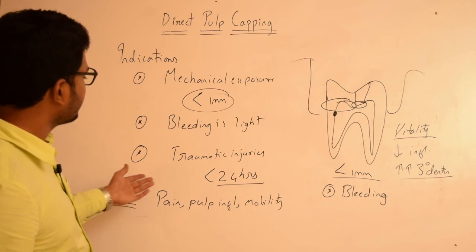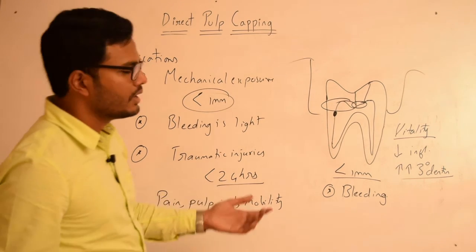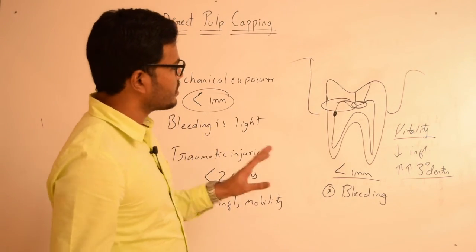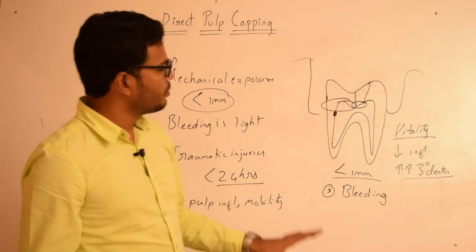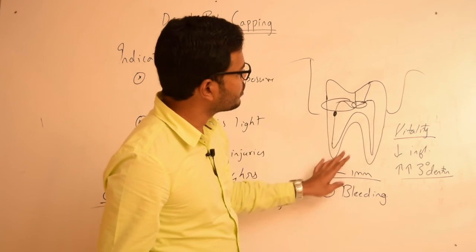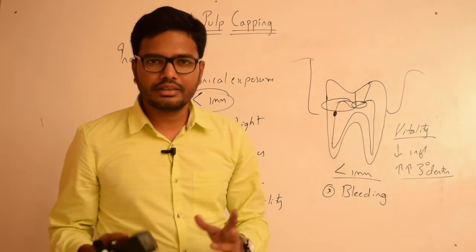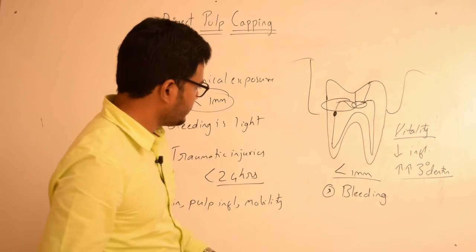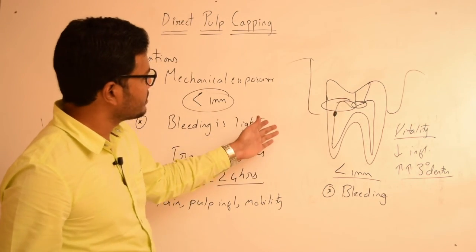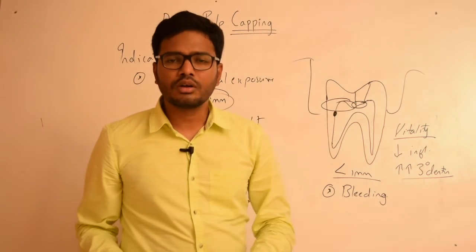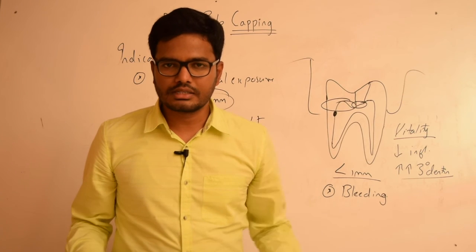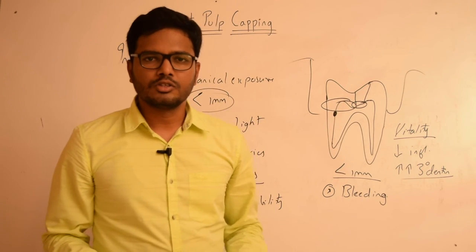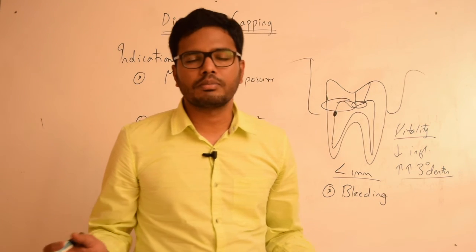Direct pulp capping is indicated in case of mechanical exposures, bleeding which is light, and traumatic injuries reported within 24 hours. It is contraindicated when there is pain, pulpal inflammation, mobility, or intra-radicular radiolucencies. The objectives are to maintain the vitality of pulp, reduce inflammation, and ensure pulpal response in the form of tertiary dentin formation. The clinical procedure should have a proper coronal seal to prevent contamination of the exposed site.